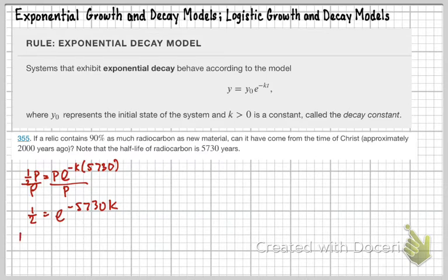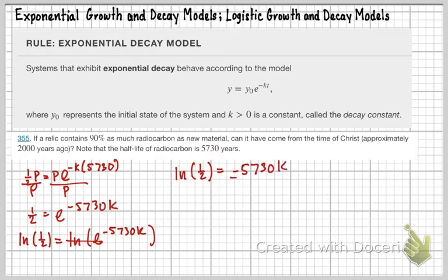Now, I have to ln both sides. So, I get the ln of one-half equals ln of e to the negative 5,730 k. On the right they cancel and on the left I just keep the ln. So, the ln of one-half equals negative 5,730 k. Then I divide by the negative 5,730 both sides.